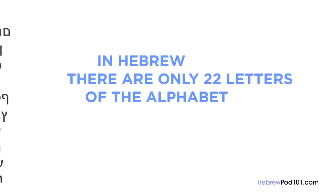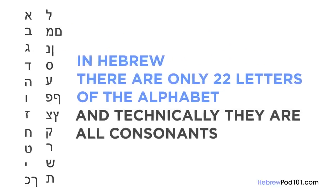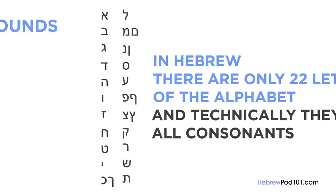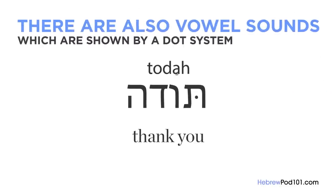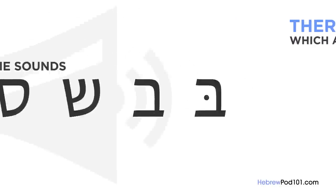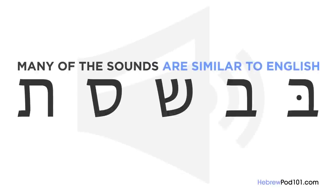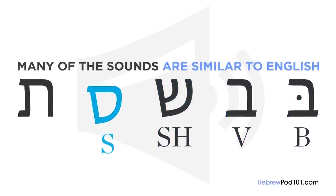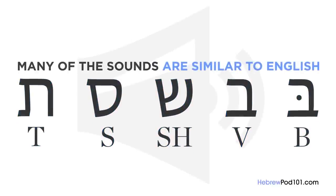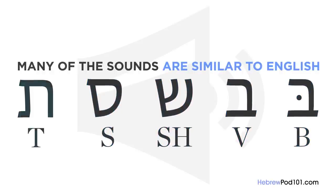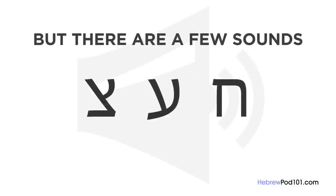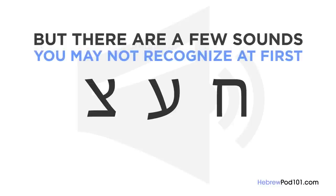In Hebrew, there are only 22 letters of the alphabet, and technically they're all consonants. There are also vowel sounds which are shown by the dot system called Nikud. Many of the sounds are similar to English, but there are a few sounds you may not recognize at first.